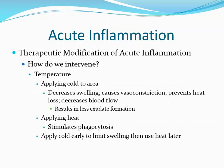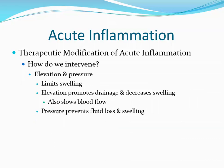How can we intervene? One way is through temperature. Applying cold decreases swelling — it causes vasoconstriction, prevents heat loss, and decreases blood flow to the area, resulting in less exudate and less swelling. Applying heat favors phagocytosis. The general rule is to use cold early on to limit swelling and later use heat to stimulate phagocytosis to clean up the damaged area. Elevation promotes drainage and decreases swelling by slowing blood flow, while pressure prevents fluid loss and helps control swelling.